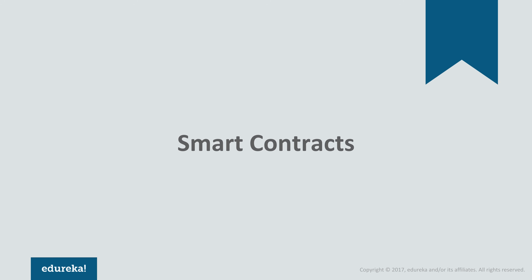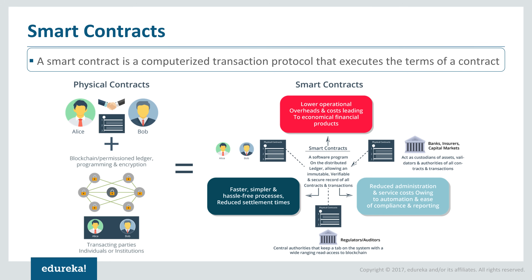Let's talk about what exactly smart contracts are. A smart contract is basically a computerized transaction protocol which executes the terms of a contract. In simple terms, it's an application where you write standard contract rules and they get executed without any changes, because anything on the blockchain is completely immutable. This is the core foundation of blockchain — even if you try to manipulate a contract, it is not possible.